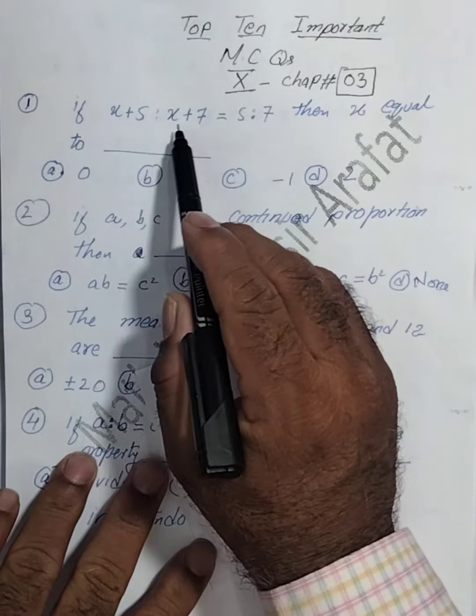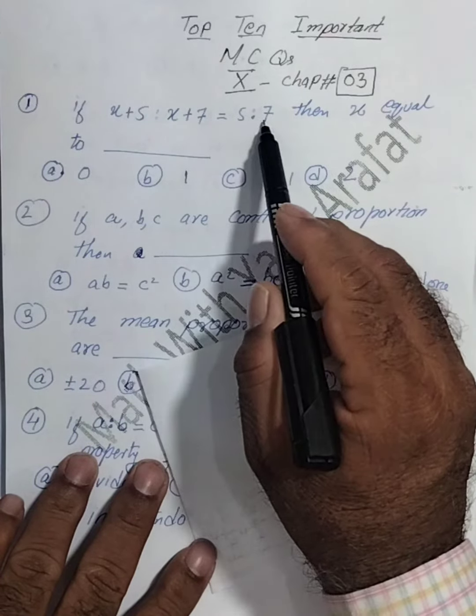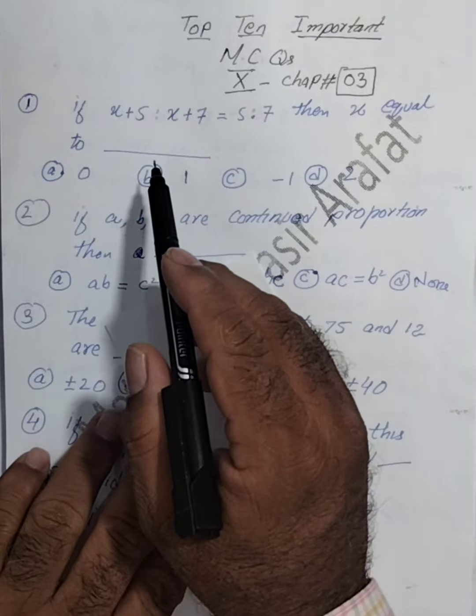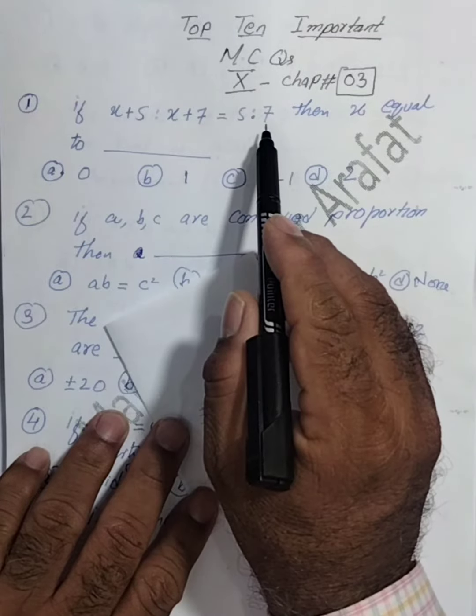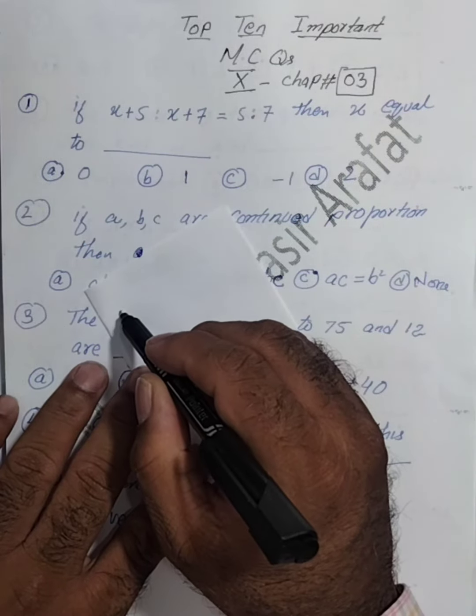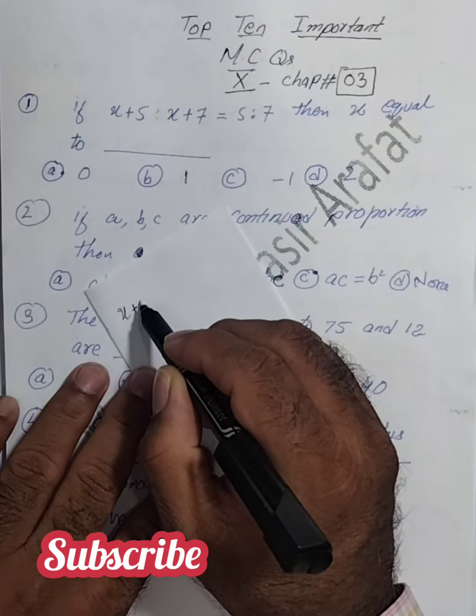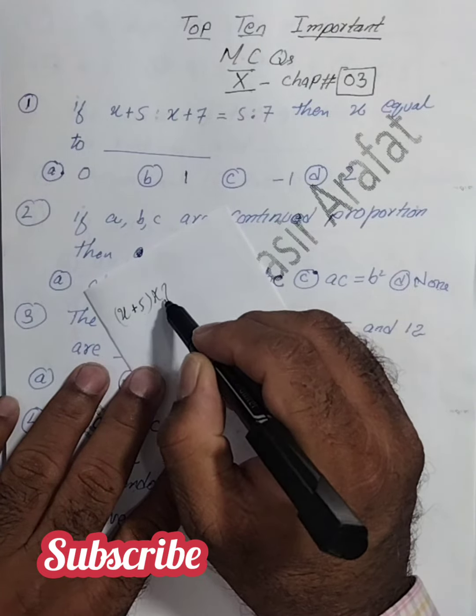x plus 5 ratio x plus 7 equals 5 ratio 7. So what is the strategy here? The product of extremes will be equal to the product of means here. So extreme means x plus 5 multiplied by 7 equals x plus 7 multiplied by 5.